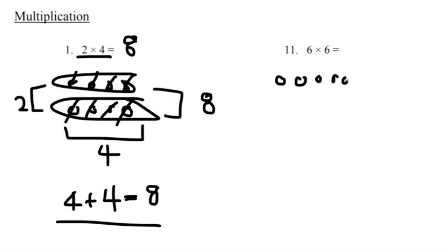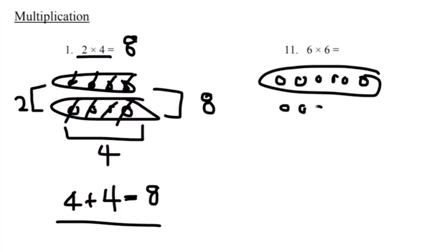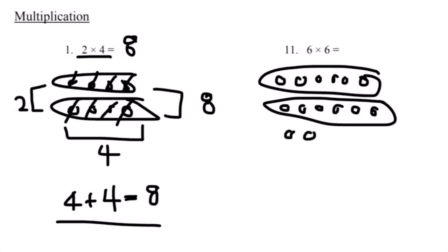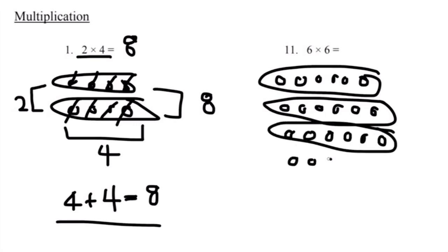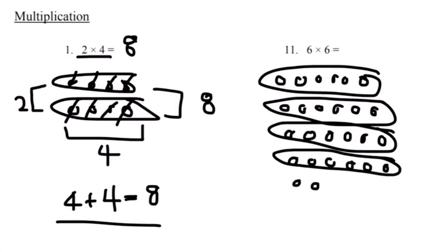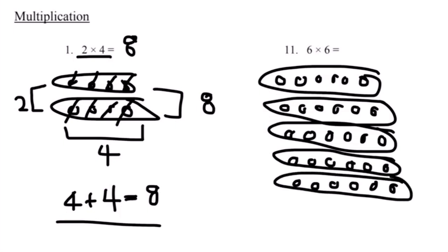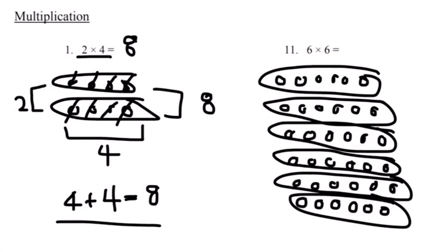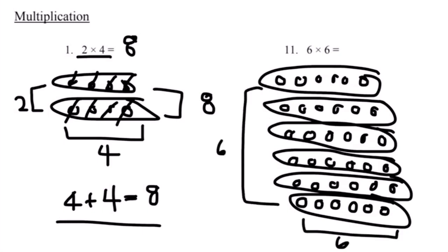We draw out six groups of six circles: first group, second group, third group, fourth group, fifth group, sixth group. We have a total of six groups of six circles.